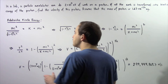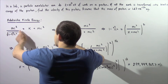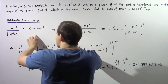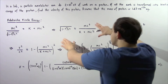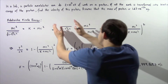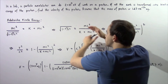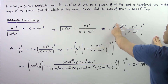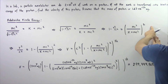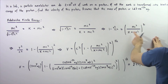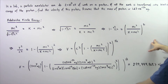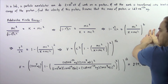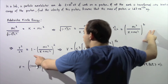Let's begin by multiplying both sides by the square root of 1 minus v squared divided by c squared, and dividing both sides by k plus mc squared, to get the following result. Next, we take the square root of the left and right sides to get rid of this radical, and we get 1 minus v squared divided by c squared is equal to the square of mc squared divided by k plus mc squared.